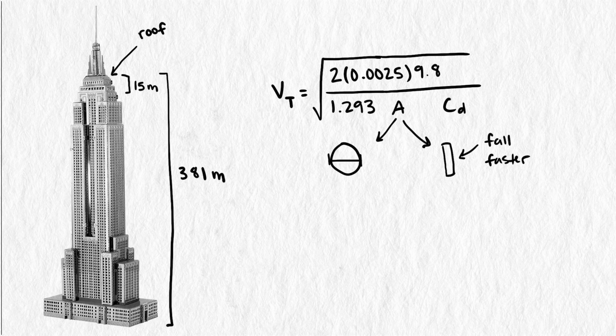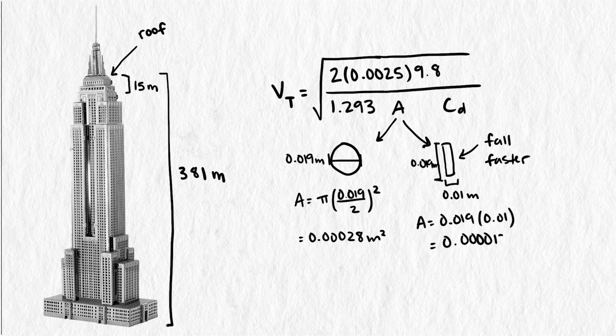Since a penny is 0.019 meters in diameter, the circular cross-section will have an area of 0.00028 meters squared, and the rectangular cross-section will have an area of 0.000019 meters squared, which averages to 0.00015 meters squared. And lastly, drag coefficient.